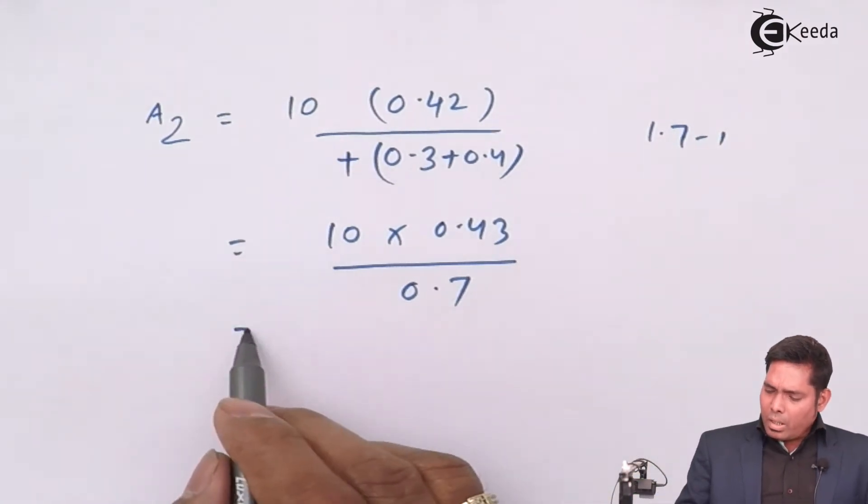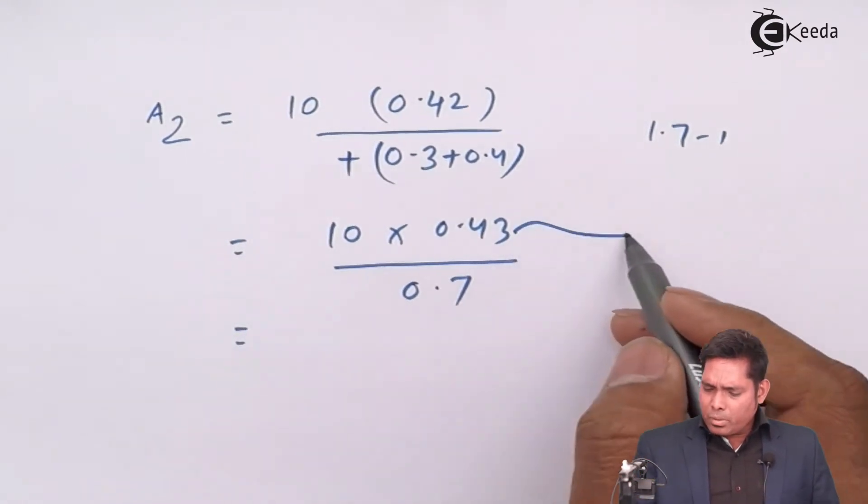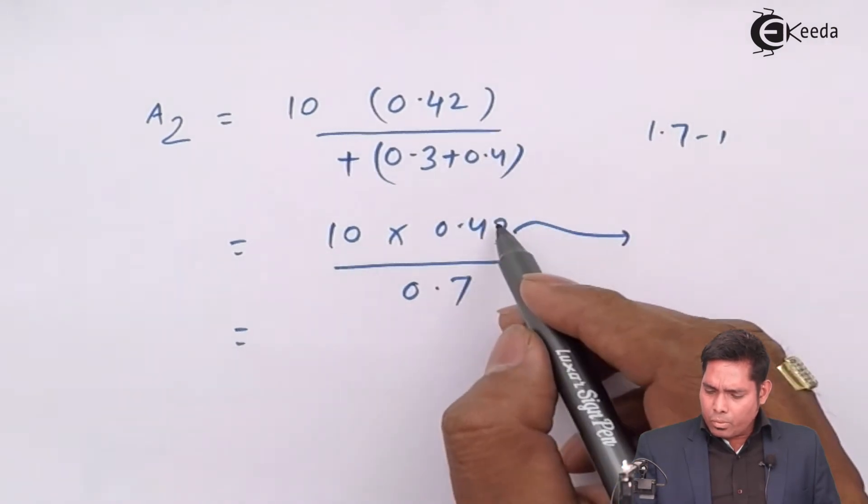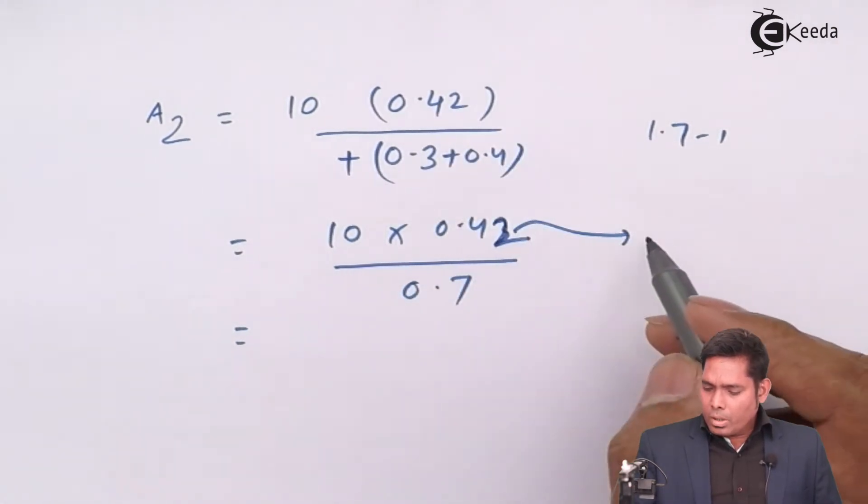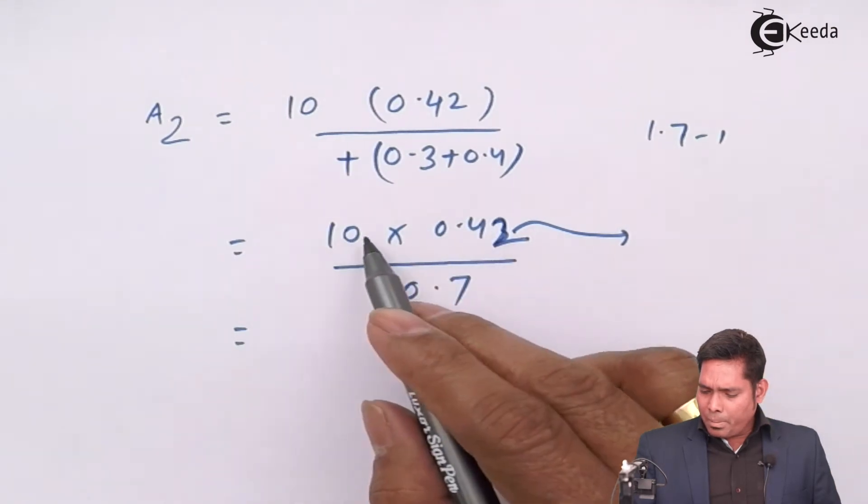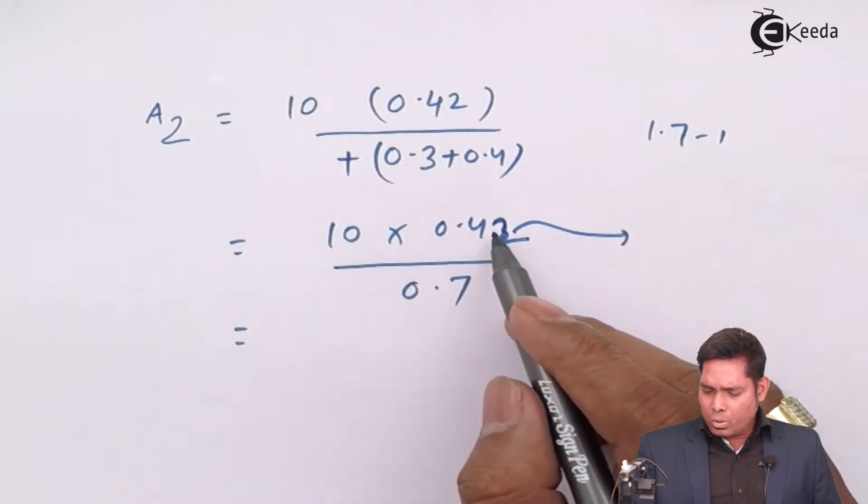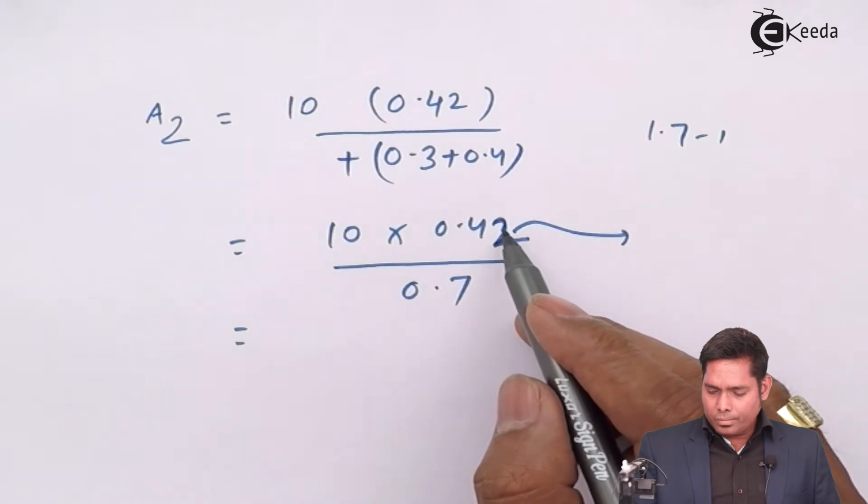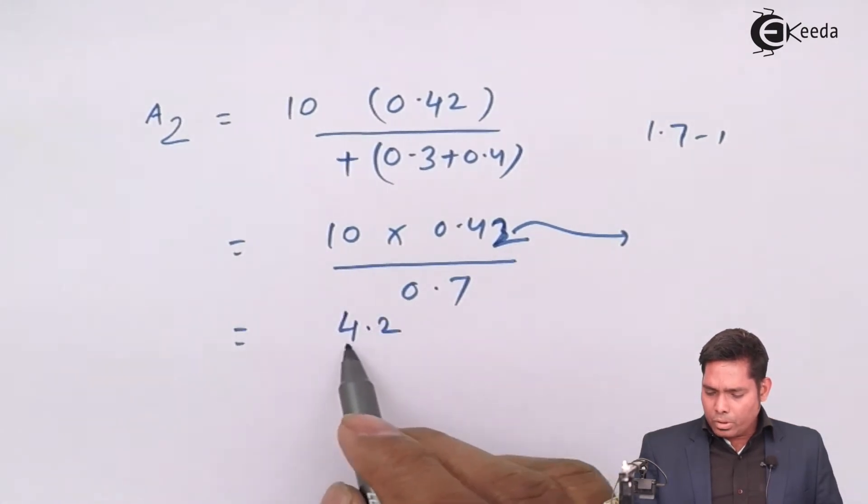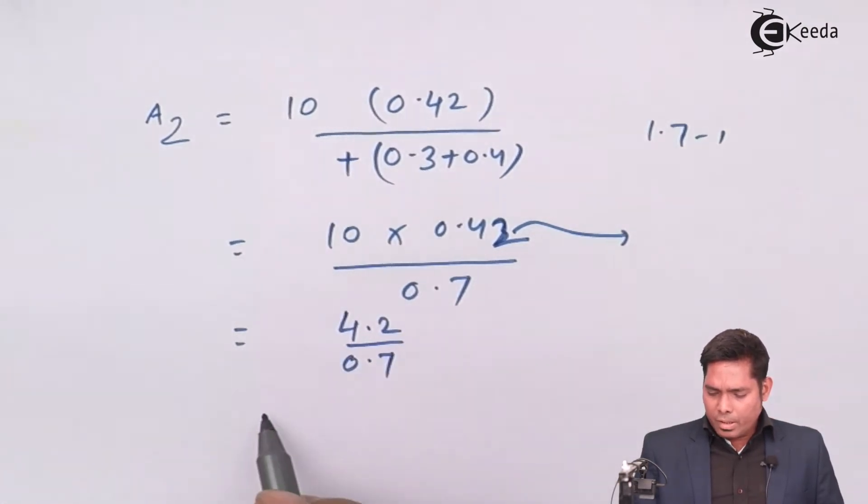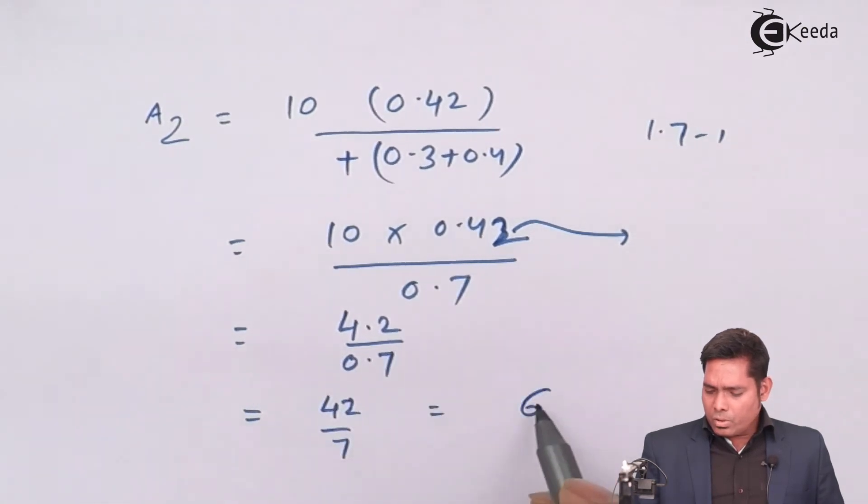We have 10 into 0.42 divided by 0.7. If I take this approximately, this is 4.2 divided by 0.7. Then it is 42 divided by 7, which equals 6 degrees.